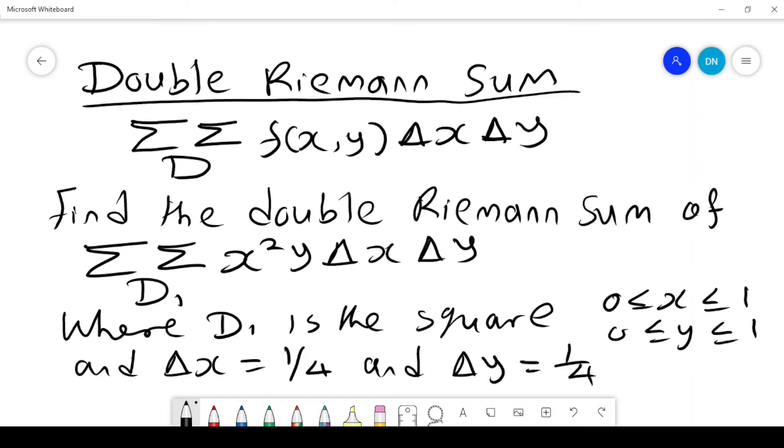The double Riemann sum. We want to find the double Riemann sum of x squared y, delta x, delta y, where D₁ is a square, x lies between 0 and 1, and y lies between 0 and 1. Delta x is a quarter and delta y is also a quarter.